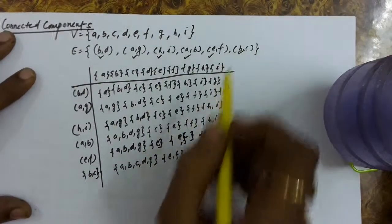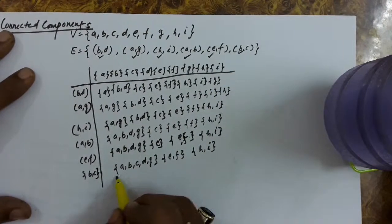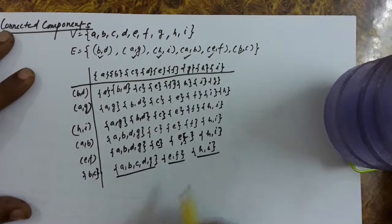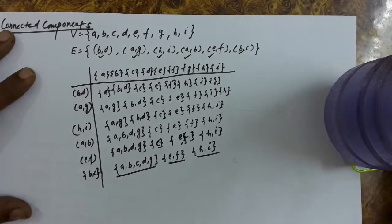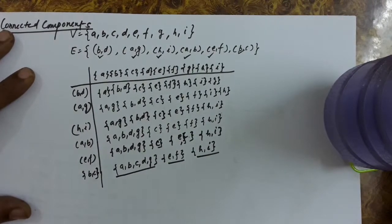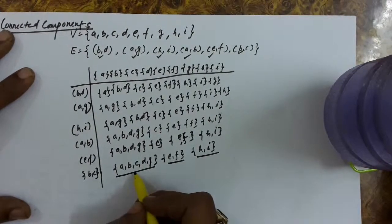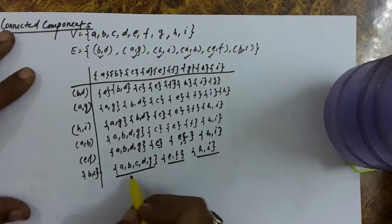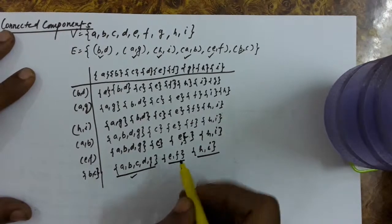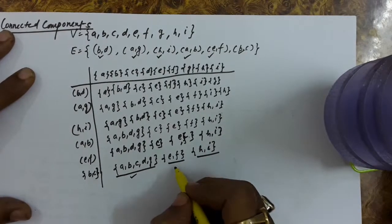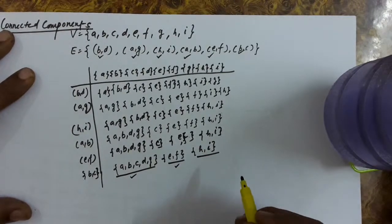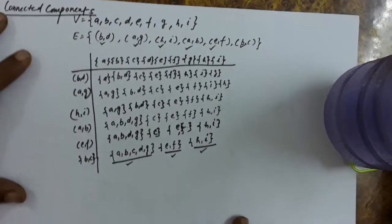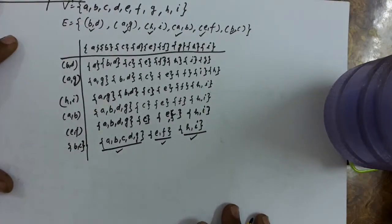We have taken all the edges and now we are remaining with three sets. These three sets are telling us that there are three connected components in the graph. The first connected component is one set, the second connected component is another, and the third connected component is the third set.